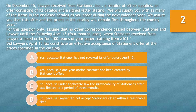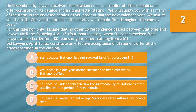Your options are: A. Yes, because Stationer had not revoked its offer before April 15th. B. Yes, because a one-year option contract had been created by Stationer's offer. C. No, because under applicable law, the irrevocability of Stationer's offer was limited to a period of three months. Or D. No, because the lawyer did not accept Stationer's offer within a reasonable time. Take 10 seconds and choose the best option.